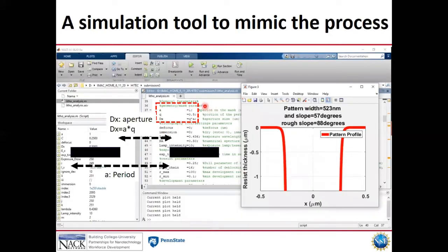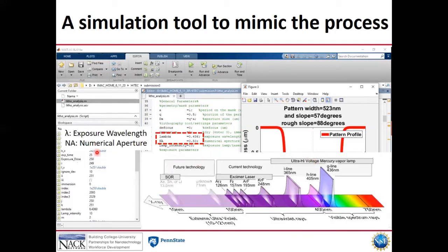Now the code looks like this. Unfortunately, still working on the user interface. However, the student can enter the parameters like A being the period of the mask and DS as the aperture size. Lambda is the exposure wavelength and NA as the numerical aperture. You see different exposure sources and different corresponding wavelengths.